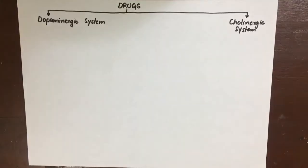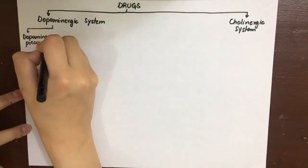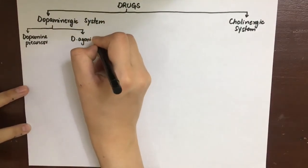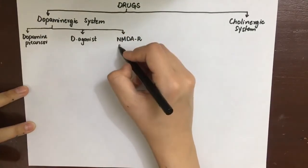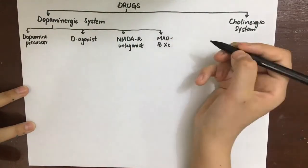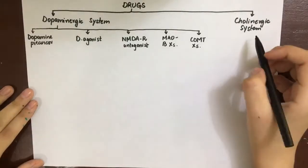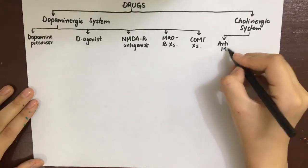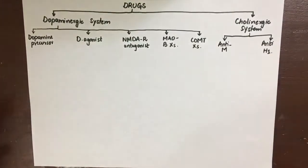The classification of anti-Parkinsonian drugs falls into two broad categories: drugs acting on the dopaminergic system to increase dopamine, and drugs acting on the cholinergic system to decrease cholinergic activity. The dopaminergic system drugs include dopamine precursors, dopamine agonists, NMDA receptor antagonists, MAO-B inhibitors, and COMT inhibitors. The cholinergic system drugs include anticholinergics and antihistaminics, which also have anti-muscarinic properties.